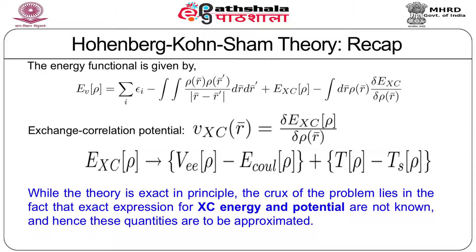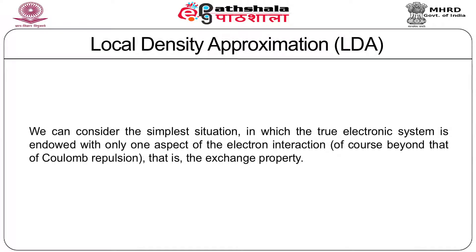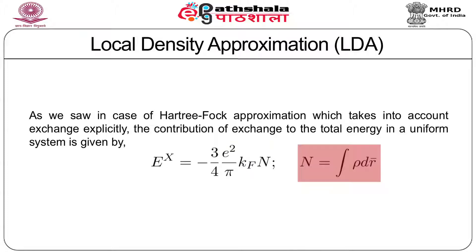While this theory is exact in principle, the crux of the problem lies in the fact that exact expressions for exchange correlation energy and potential are not known; hence these quantities are to be approximated. Let us consider the simplest situation in which the true electronic system has only exchange beyond the Coulomb repulsion or Hartree term. As we saw in the Hartree-Fock approximation, which takes into account exchange explicitly, the contribution of exchange to the total energy of the uniform system is given by an expression where N is the total number of electrons obtained by integrating the charge density over space.